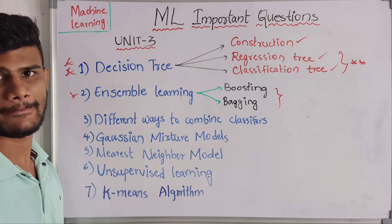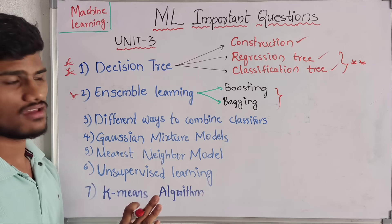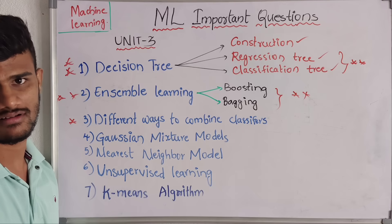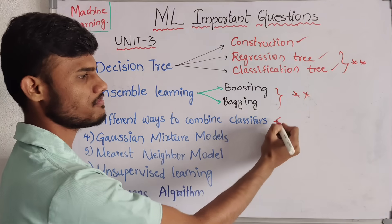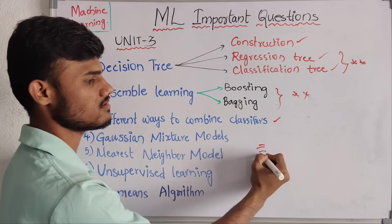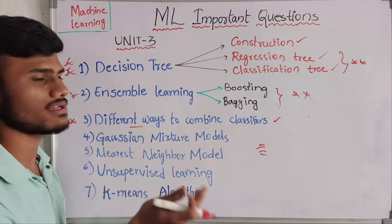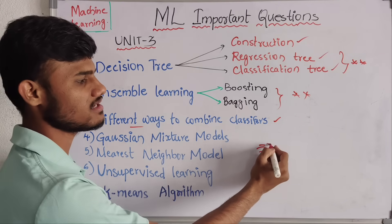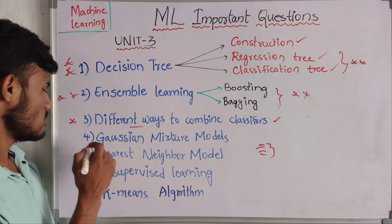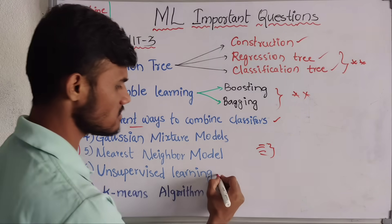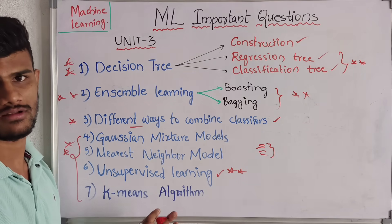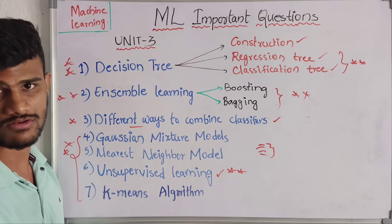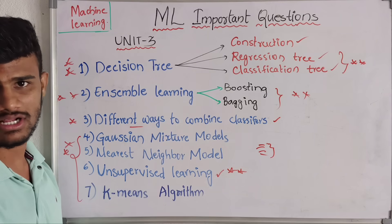Now coming to the second topic — Ensemble Learning. It is also an important question. In this we have boosting and bagging — small concepts that are easy to learn. Then next we have different ways to combine a classifier. It is a short question, maybe up to two marks. We have seven to eight types with side headings that need to be covered.